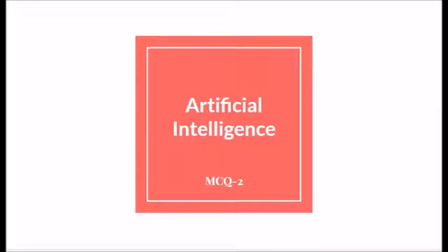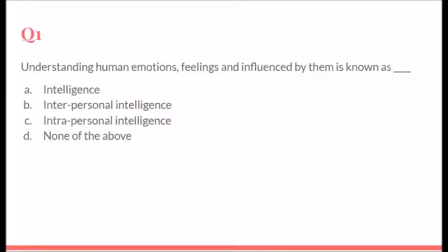As we are aware that CBSE has planned objective MCQ-based questions, so these are a few more questions for Artificial Intelligence class 10th. Number one: Understanding human emotions, feelings, and influence by them is known as what kind of intelligence?